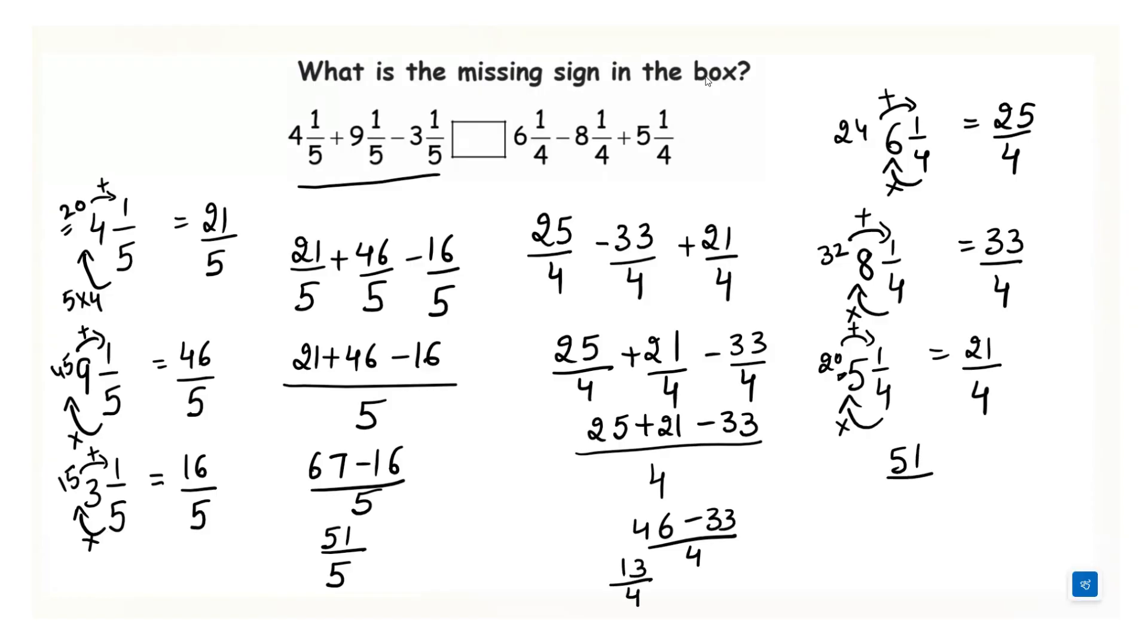Now we have to compare 51 over 5 with 13 over 4. So we have to cross multiply here, 51 into 4. Then there is a box, 13 into 5. So here we will get 204 and here we will get 65. That means this part is greater. This one is greater.